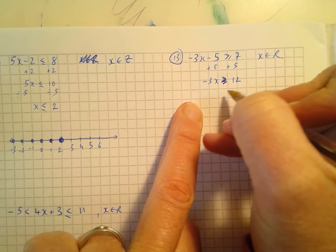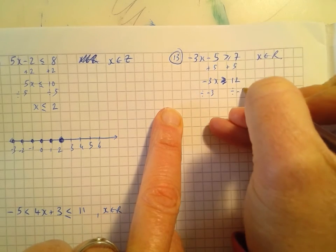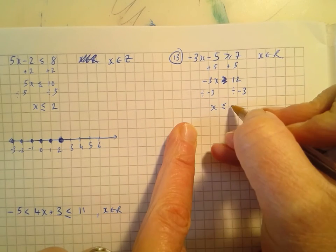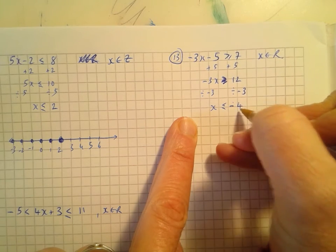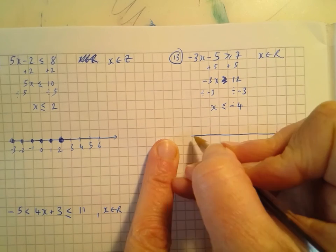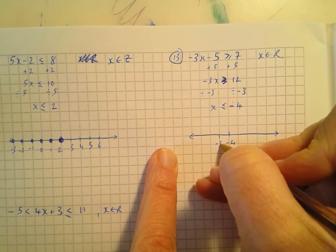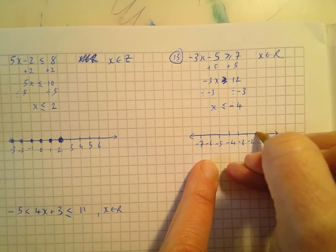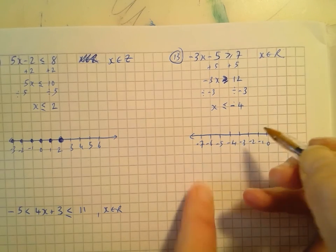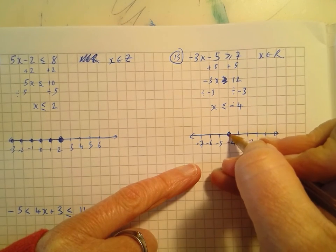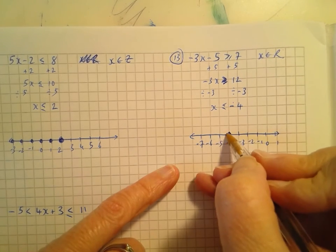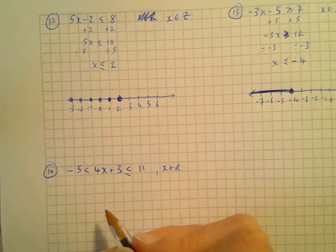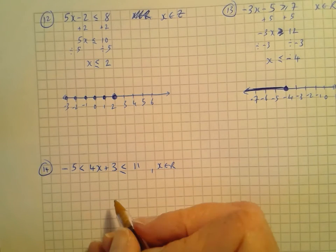Example 10: 5 - 2x ≥ -7, x ∈ Z. Subtract 5 from both sides: -2x ≥ -12. Dividing by a negative number changes the direction: x ≤ 6. Draw the number line with 6 in the middle, and place dots on all whole numbers up to and including 6, since x ∈ Z.